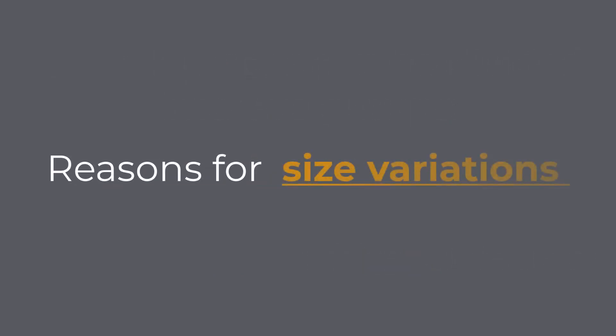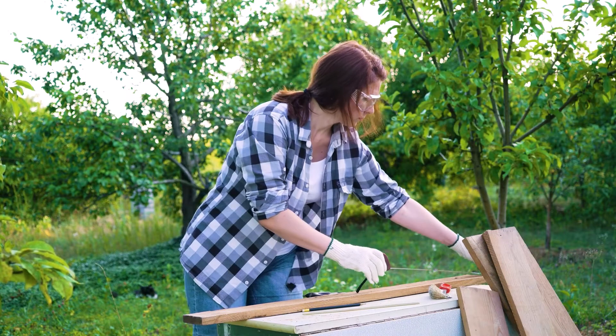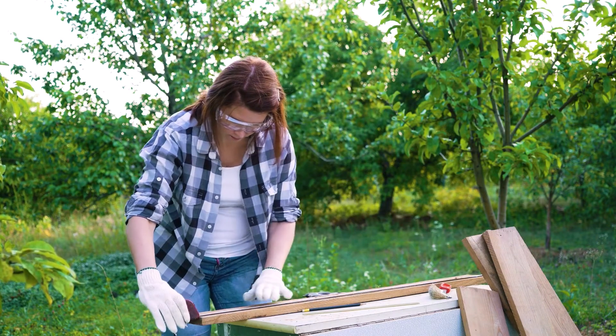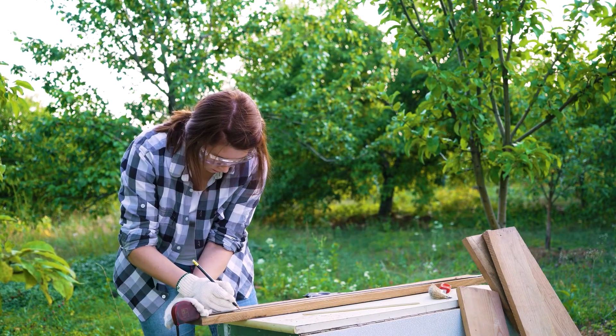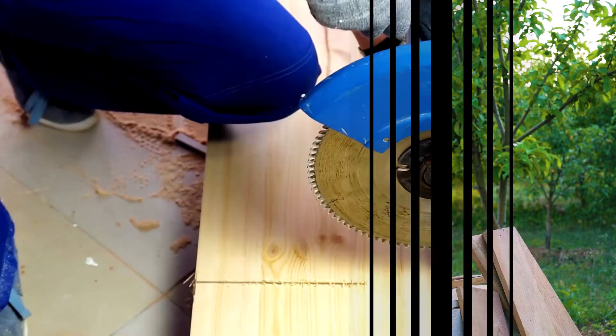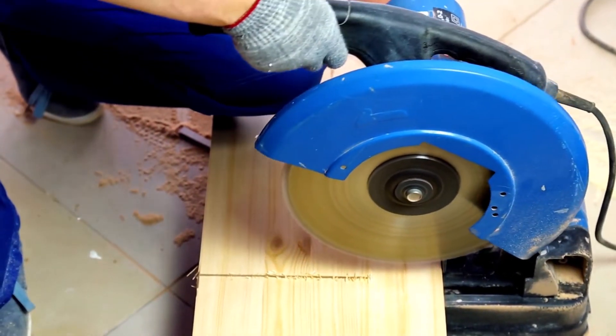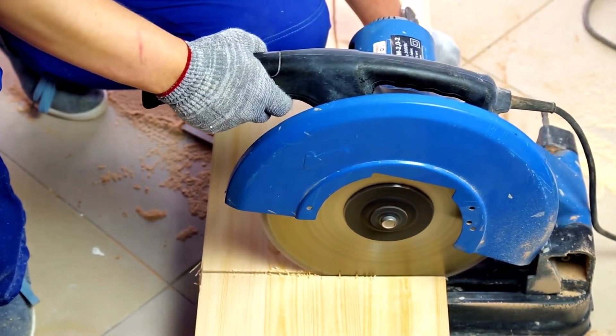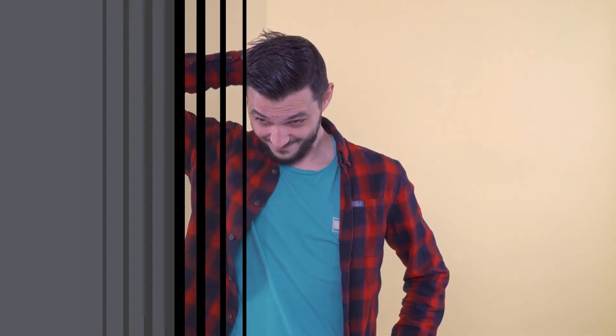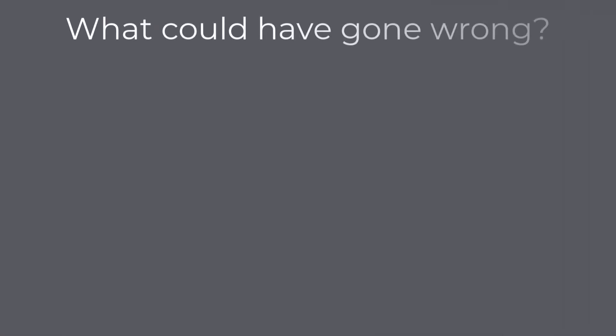Reasons for size variations. Let us now investigate one simple example. Imagine a wood plank 1.5 meters long that we would like to cut with a saw to 1.2 meters. We take a measuring tape and mark where we want to cut. After we finish cutting, we measure the plank and it is slightly shorter than 1.2 meters. We are scratching our heads, completely confused. Why was this plank shorter when we measured it? Let us analyze what could have gone wrong.